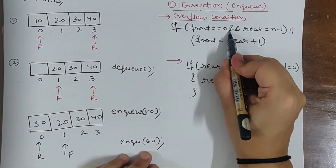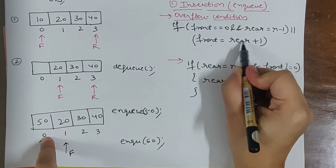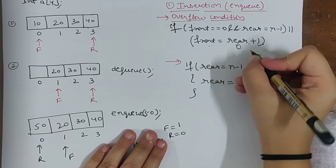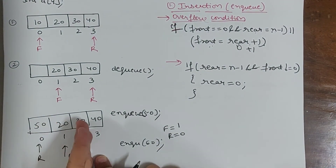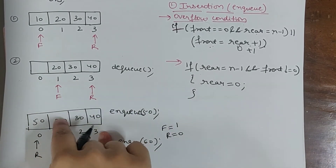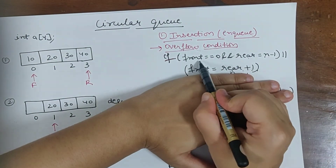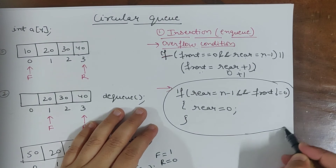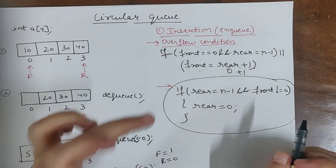So overflow condition for circular queue: first, front is 0 and rear is n minus 1. Second, front equals rear plus 1 — that is the overflow condition. And the most important condition for circular queue is: if rear equals n minus 1 and front is not equal to 0, set rear equal to 0. This is the main and important condition. You can show this scenario in an exam and write this condition.